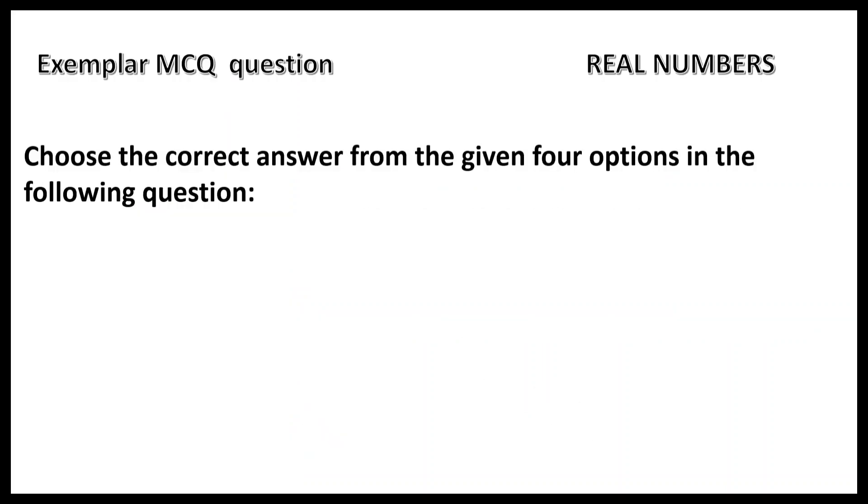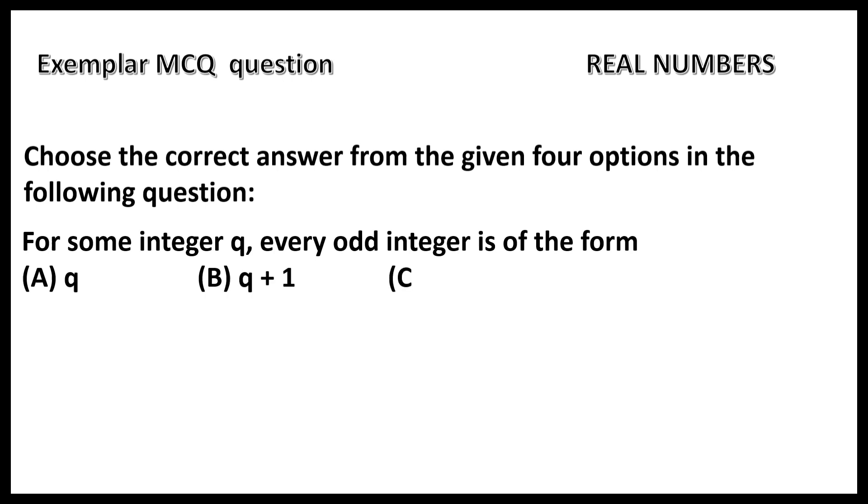Choose the correct answer from the given 4 options in the following question. The question is, for some integer q, every odd integer is of the form of option A: q, option B: q + 1, option C: 2q, option D: 2q + 1.